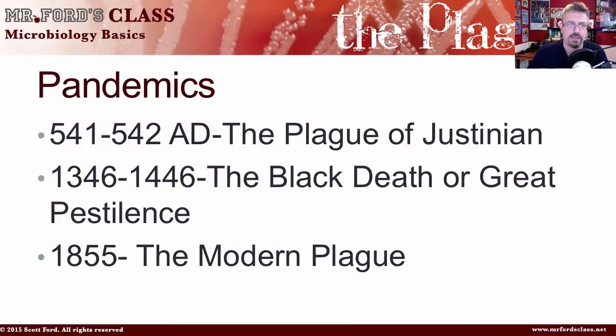So to summarize the mortality rates: bubonic plague is 13.5%, septicemic is 22%, and pneumonic is 57% — that's why bubonic is the least severe of the three. No discussion of Yersinia pestis would be complete without talking about the pandemics it has caused: the Plague of Justinian, the Black Death, and the modern plague.